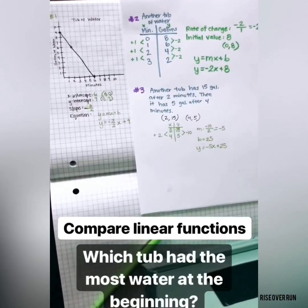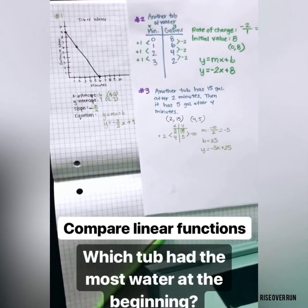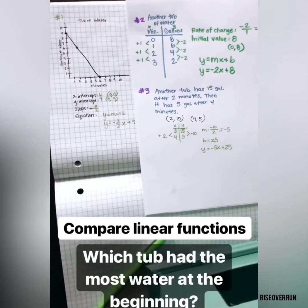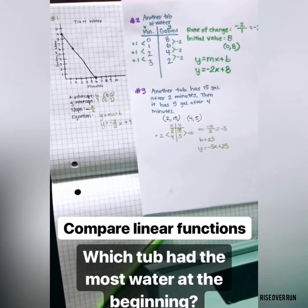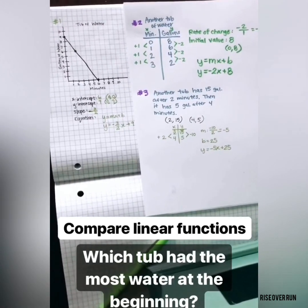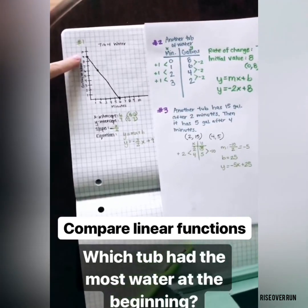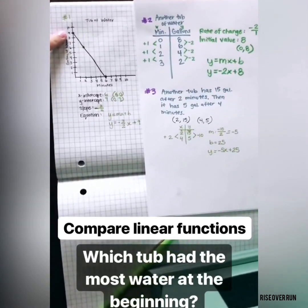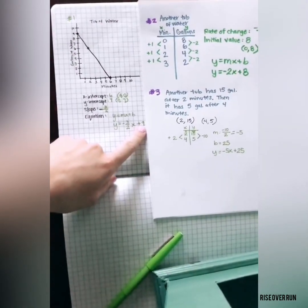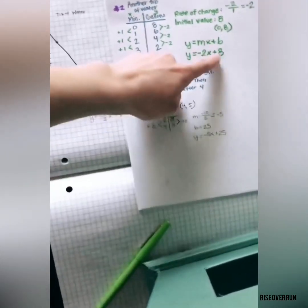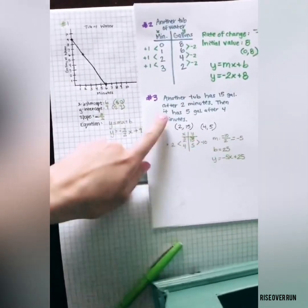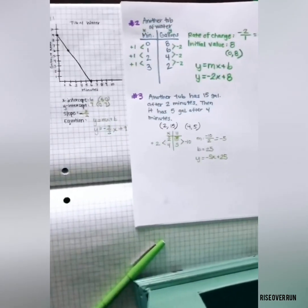Another thing you may be asked is to make comparisons about linear functions. In this situation, if we were asked which tub of water had the most water at the beginning, we would need to look at the y-intercepts or the initial values. If we look at the equations, we can just look at b. So we have a 9, an 8, or a 25, so tub number 3 had the most water at the beginning.